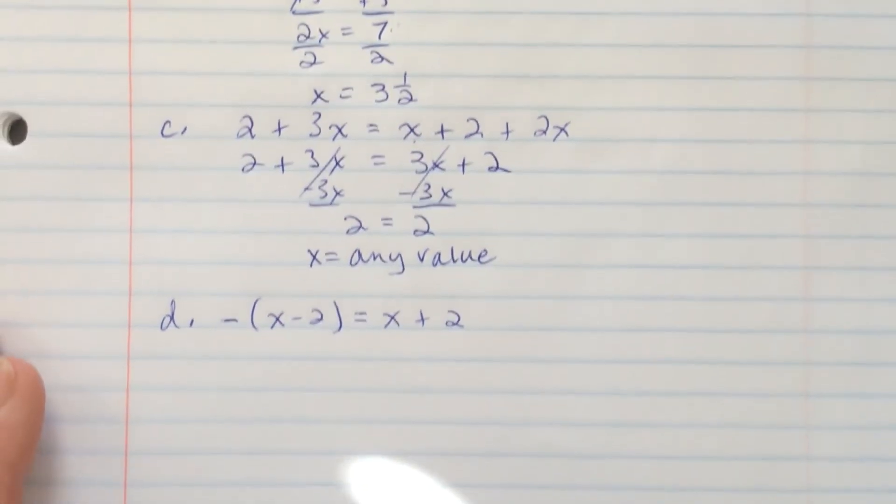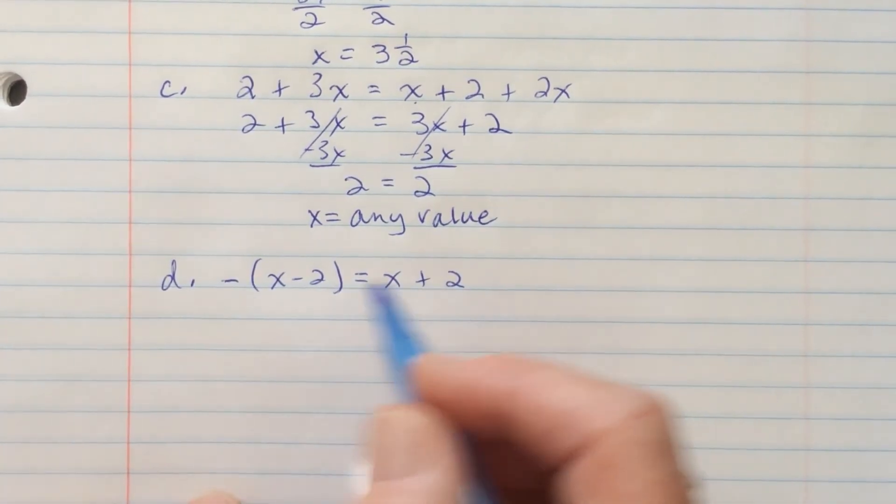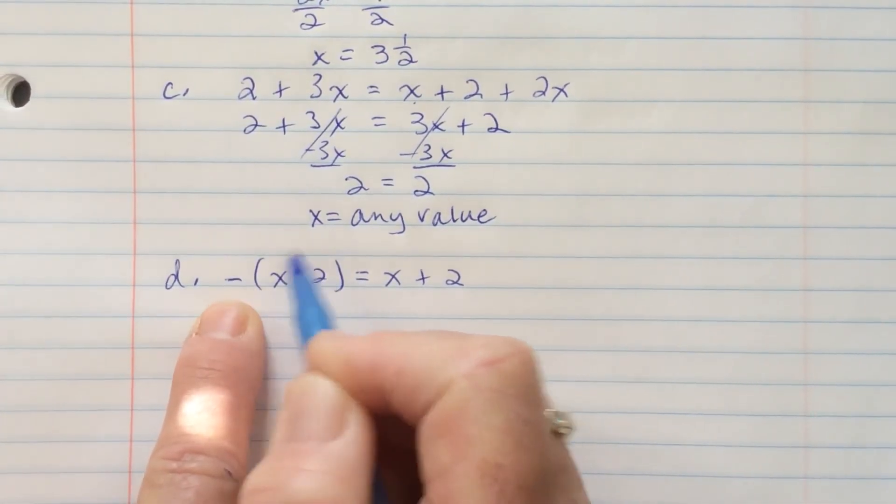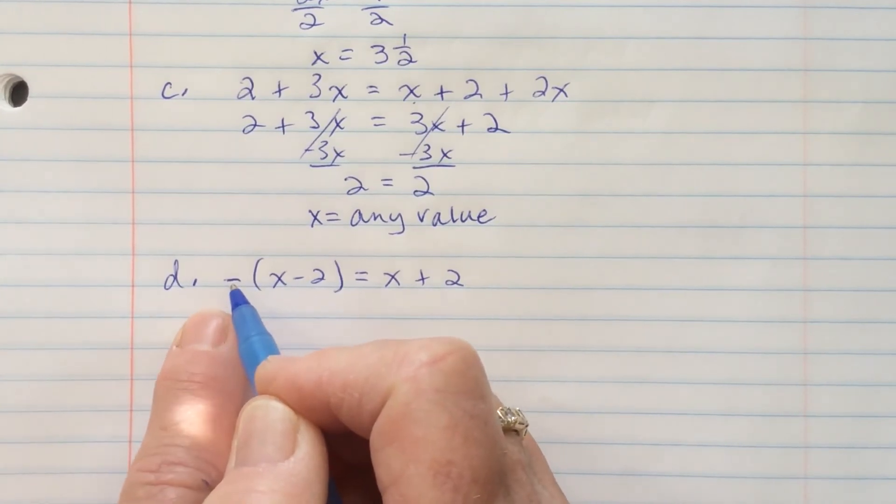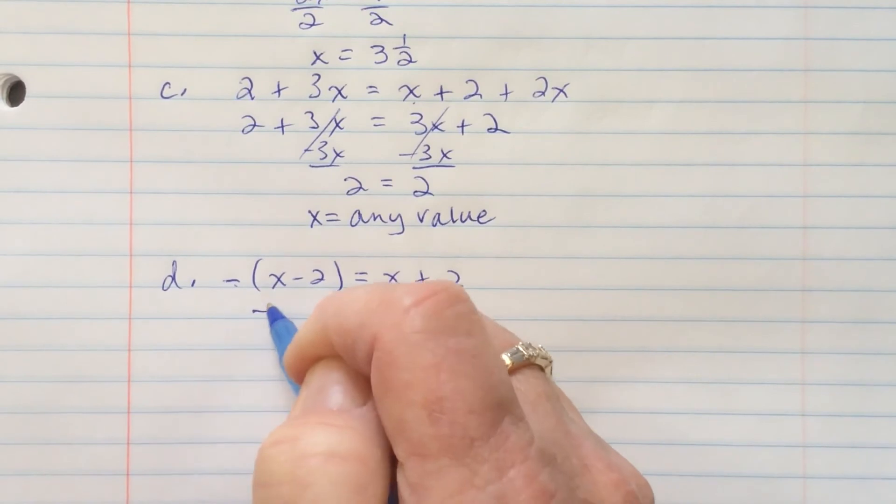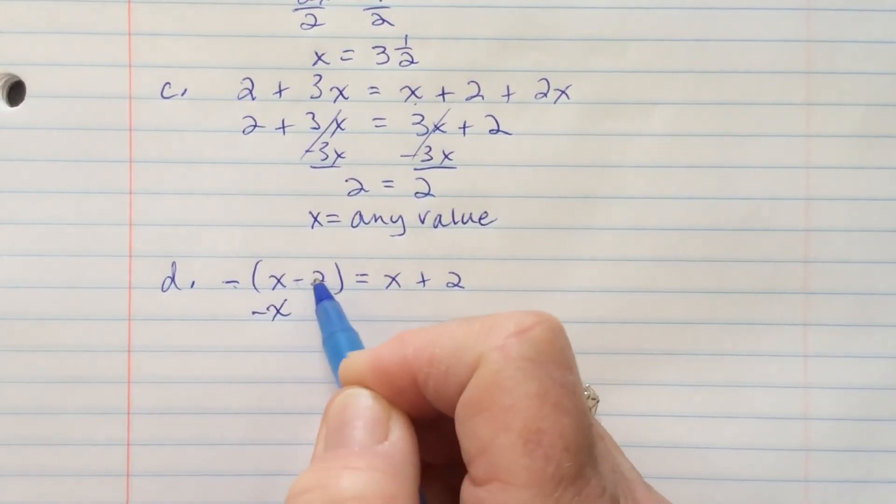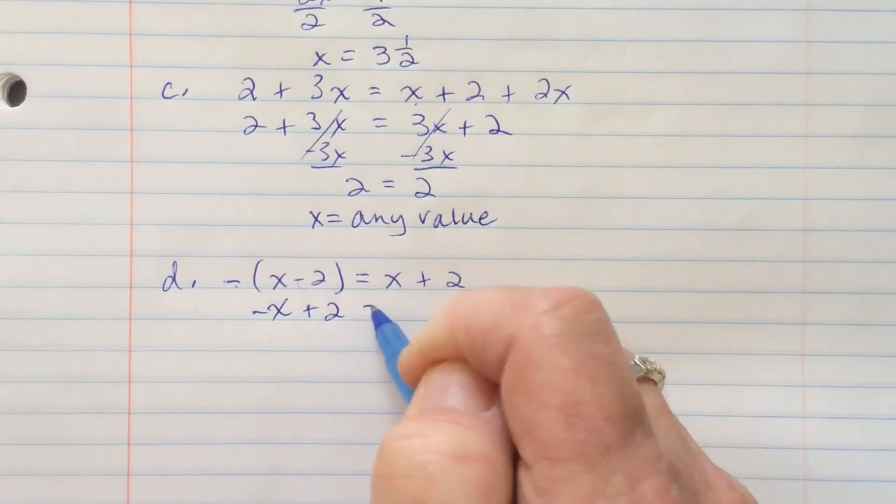All right, the last one. D, negative of x minus 2 equals x plus 2. First, I need to flip this because it has a minus sign in front of the parentheses. So, the opposite of x becomes negative x. The opposite of negative 2 becomes plus 2.